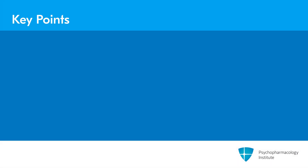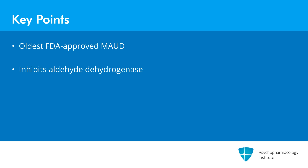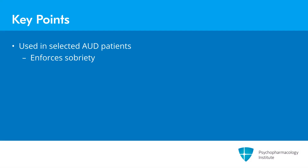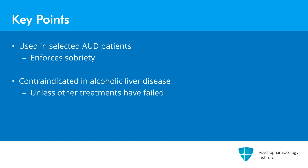Key points for disulfiram: it is the oldest of the FDA-approved MAUDs. It inhibits mitochondrial aldehyde dehydrogenase so that the intermediate acetaldehyde builds up and produces the alcohol-disulfiram reaction. Disulfiram is to be used in selected alcohol use disorder patients who can benefit from enforced sobriety so that supportive and psychotherapeutic interventions can be used to best advantage. Finally, disulfiram must not be used in those with alcoholic liver disease unless all other treatments have failed and resumption of alcohol would be catastrophic.